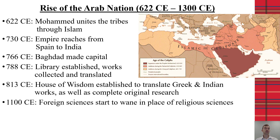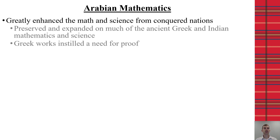At the time when the House of Wisdom was established, foreign sciences were important and were seen as a way to better understand their religion. However, around 1100 CE that started to wane. While there are significant Arabian mathematicians still doing important work well beyond 1100, 1200, and 1300, the focus began shifting toward religious sciences rather than foreign sciences.